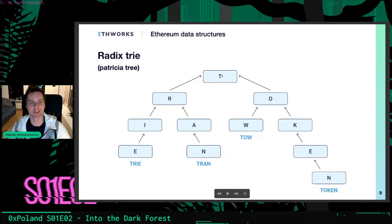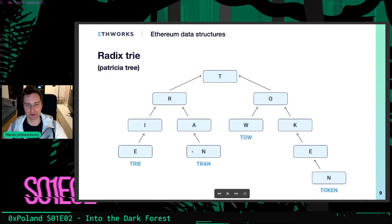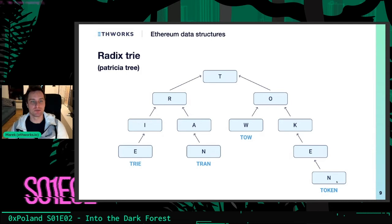Radix trees are typically constructed on some kind of alphabet. For example, if I traverse from the root spelling T-R-I-E, the value at the leaf on the left side represents the word 'tree.' We can traverse all the different paths to get different values like 'tree,' 'tran,' 'toe,' and 'token.' It's a pretty straightforward concept. Many of you might have heard about it, though it's not a very popular data structure so some may not have.